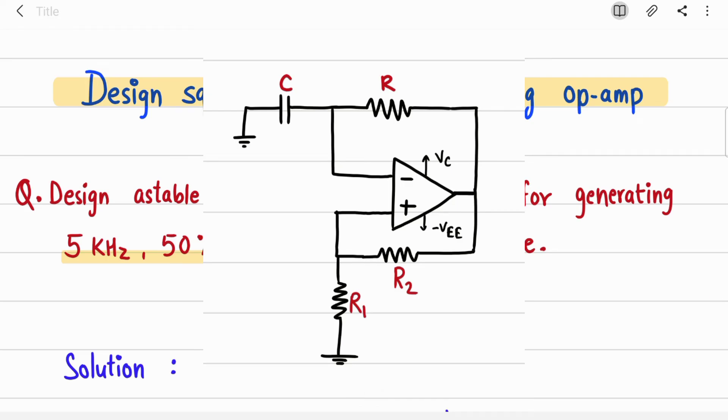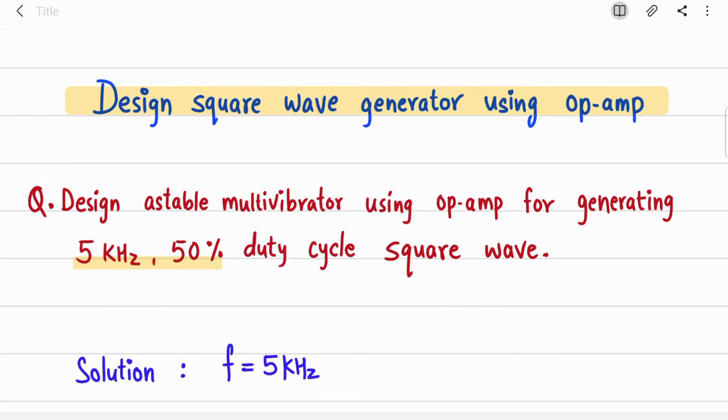Square wave has 50% duty cycle only, we know that. But there is a different type of stable multivibrator which is an asymmetric stable multivibrator that we will cover in another video - how to solve for 60% or 40%. But the simplest scenario is a square wave which is 50% duty cycle. In this question they give you the frequency.